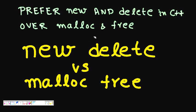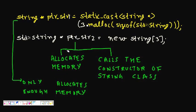With class objects, it is more preferable than malloc and free, and we will see the reasons. Let's see some code. We are using a string class, standard string. So if I write string star ptr_str1, I'm declaring a pointer to a string array.